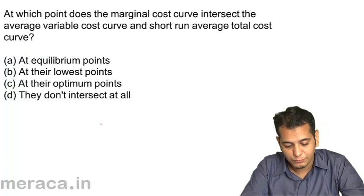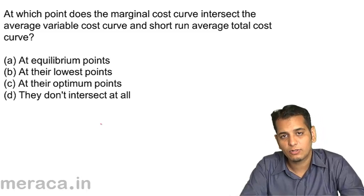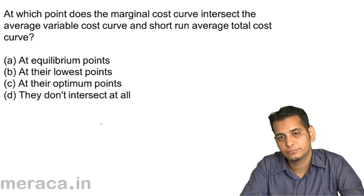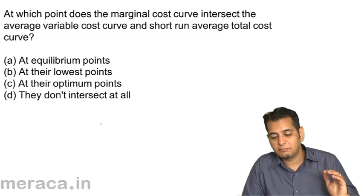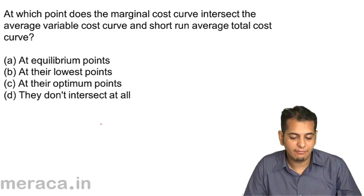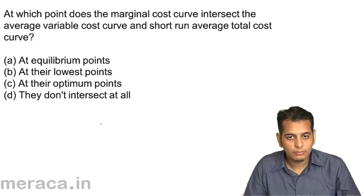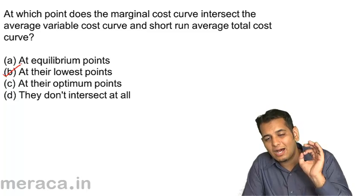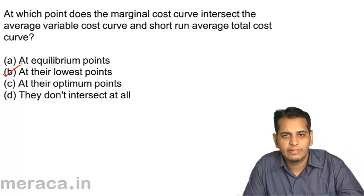At which point does the marginal cost curve intersect the average variable cost curve and short run average cost curve? It intersects at their lowest points — both are at minimum when the marginal cost curve intersects them.